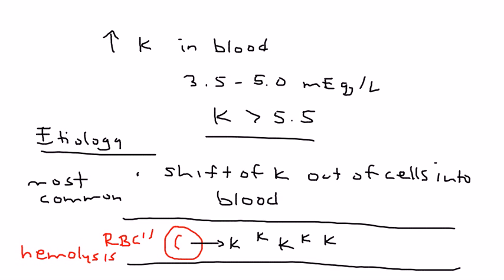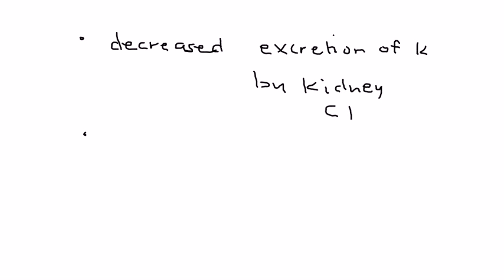That's the most common reason. There's two other reasons why people can get hyperkalemia. The next one is when there's a problem with the kidney—decreased excretion of potassium by the kidney—and that can happen when you have chronic kidney disease. The last reason is excessive intake of potassium, most commonly in the hospital setting.